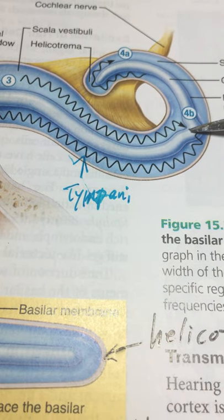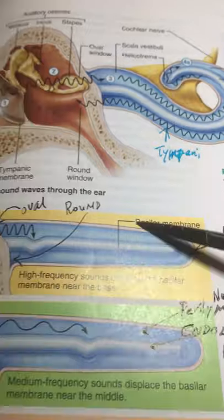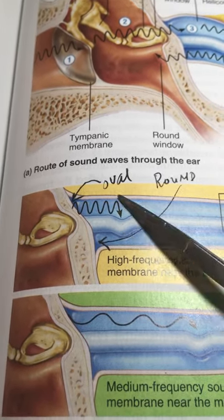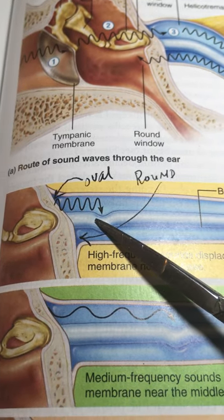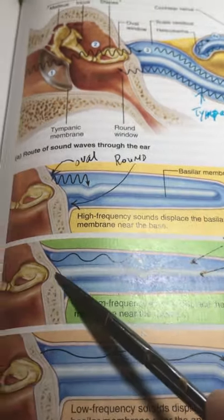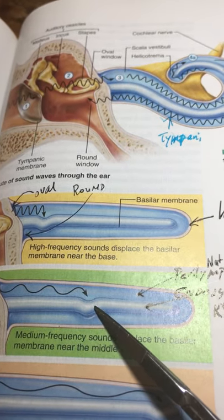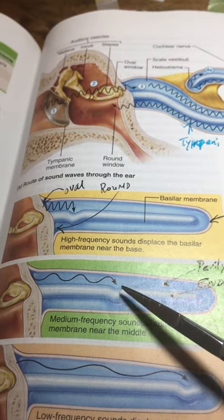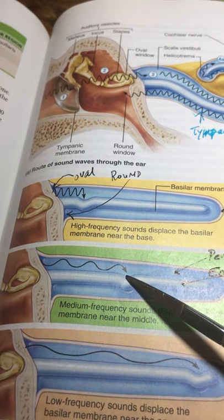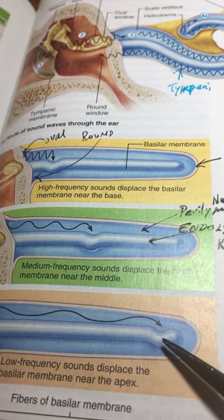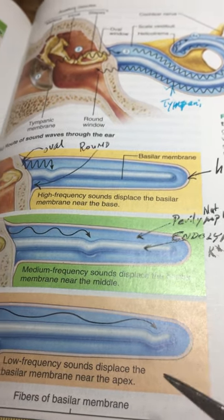Sound waves will have an impact at a particular spot along the unrolled cochlea. A high-pitched sound like a flute has a short wavelength and impacts close to the oval window. A medium-range sound — from a viola, cello, or alto or tenor voice — deflects the system in the middle. Bass sounds have the longest, slowest waves and deflect the system out near the helicotrema.